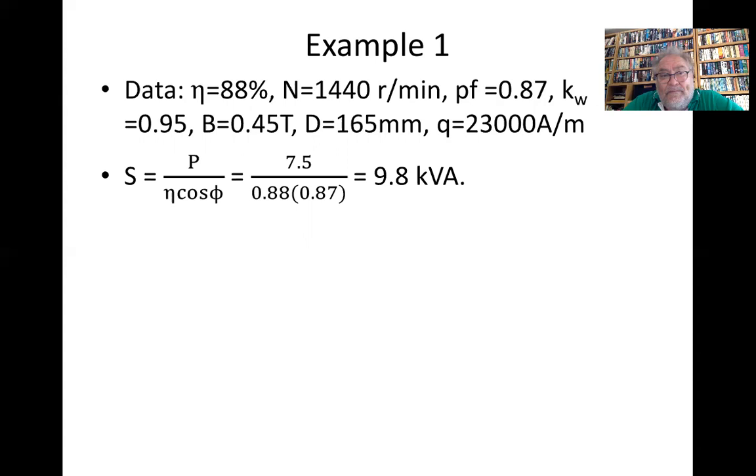So therefore S = P divided by efficiency = 5, which gives us 9.8 kVA. And synchronous speed is 60f over p, that gives us 3000 over 2, which is 1500 rpm or 25 revs per second.